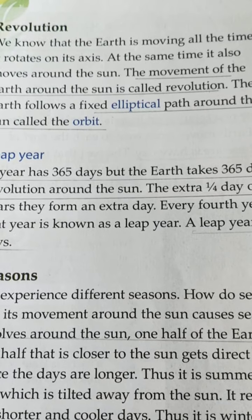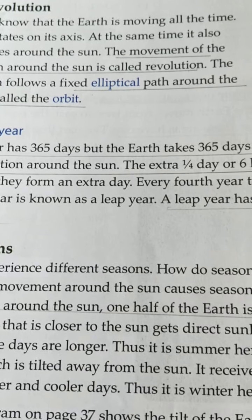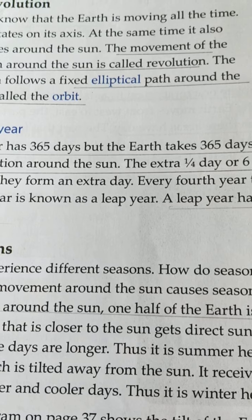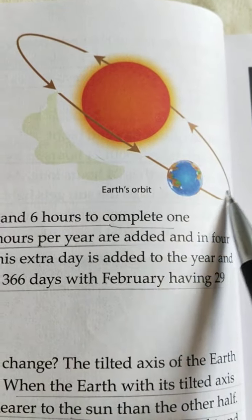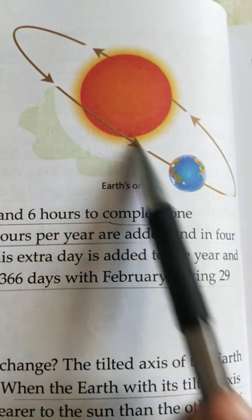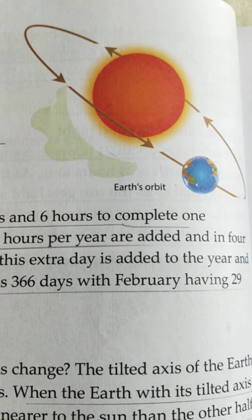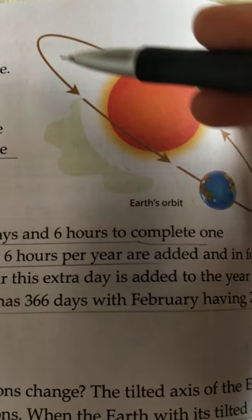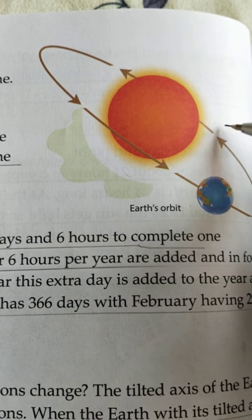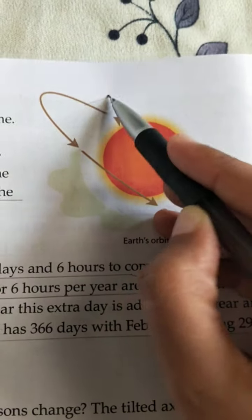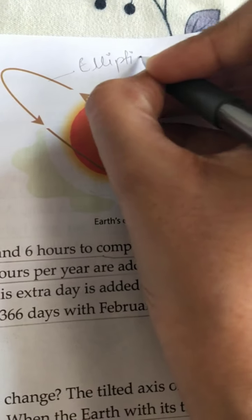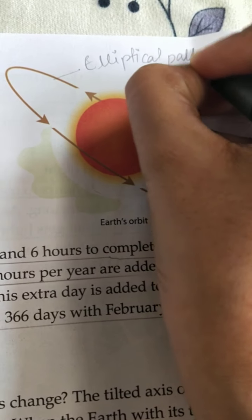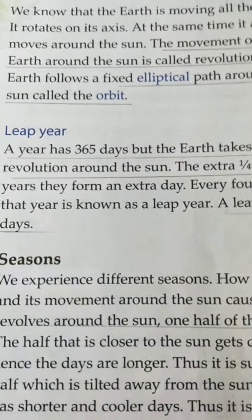The earth follows a fixed elliptical path. Here you can see in the diagram — the arrow ones — this is known as an elliptical path. That means an elongated circle stretched in an oval shape. This is known as the elliptical path, and this fixed path is known as the orbit.